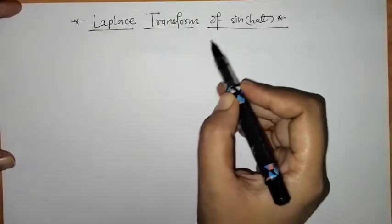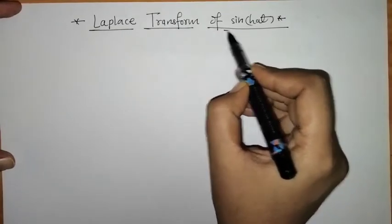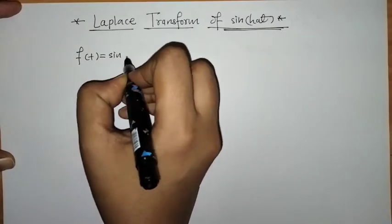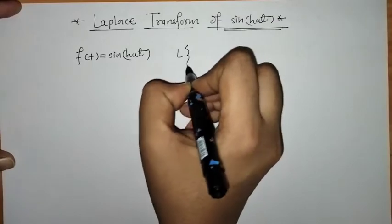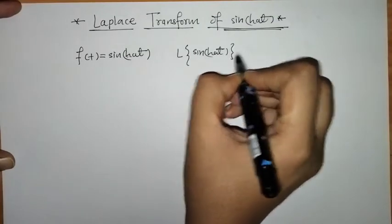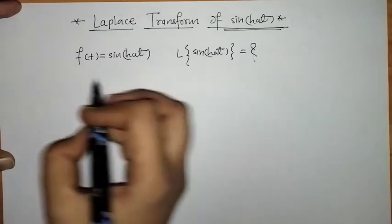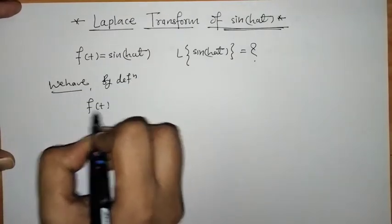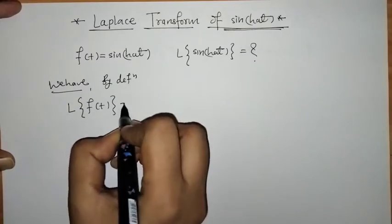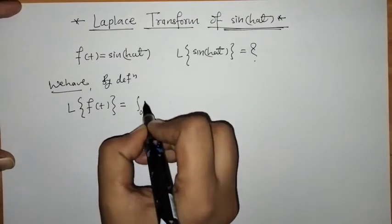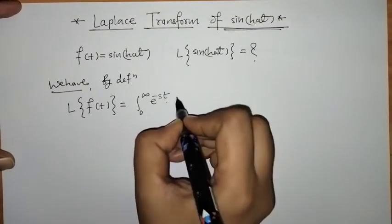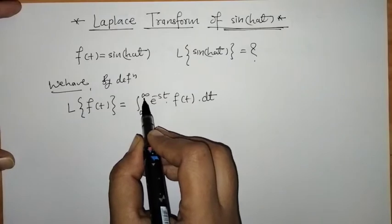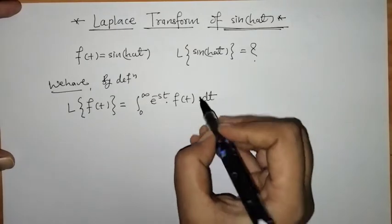Hello everyone, welcome to Unlock Maths. Today we have to find the Laplace of hyperbolic sine. We have given f(t) equals hyperbolic sine, and we have to find its Laplace by using the definition of Laplace transform. The definition is: the integral within limits 0 to infinity of e raised to minus st times f(t), integrated with respect to t.